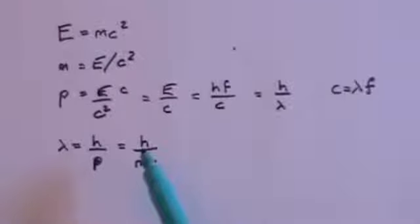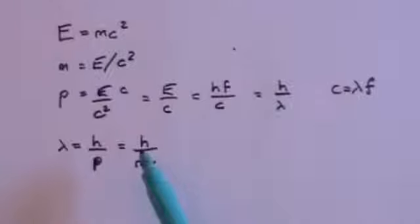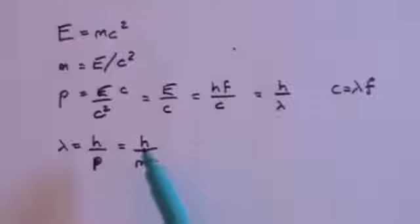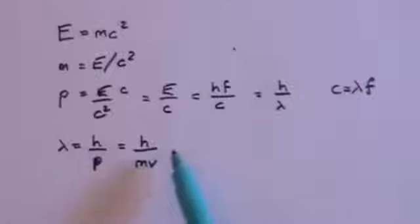They said well if it's a wave it will display properties of a wave — it will show diffraction patterns. So they took electrons and essentially did the double slit experiment, or they put the electrons through a diffraction grating — the gaps between atoms in a regular crystalline structure. They took a crystal, fired electrons at it, and what did they see? A diffraction pattern, which verified de Broglie's assumption that electrons could behave like waves.